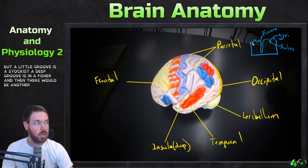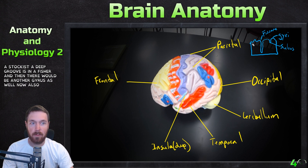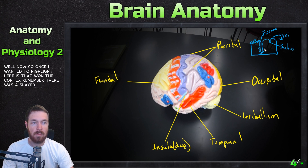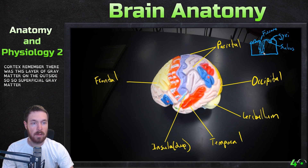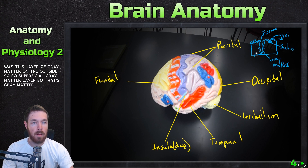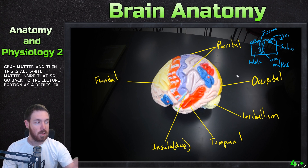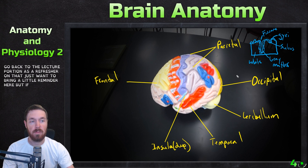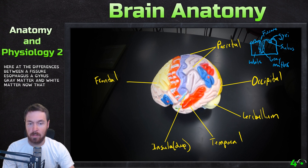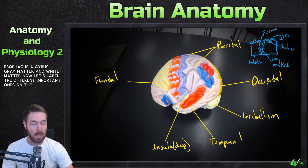One thing to highlight here: on the cortex there is a layer of gray matter on the outside — a superficial gray matter layer — and then all white matter on the inside. Go back to the lecture portion as a refresher on that. Just a reminder of the differences between a fissure, a sulcus, a gyrus, and gray matter versus white matter.